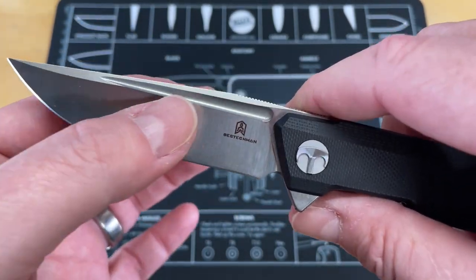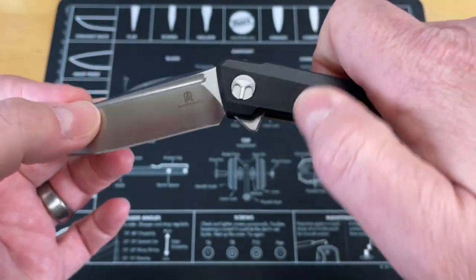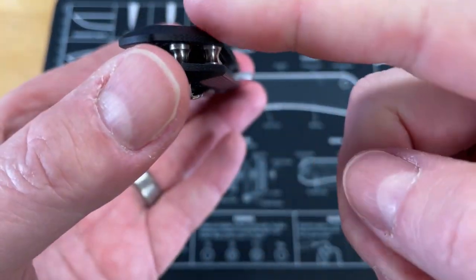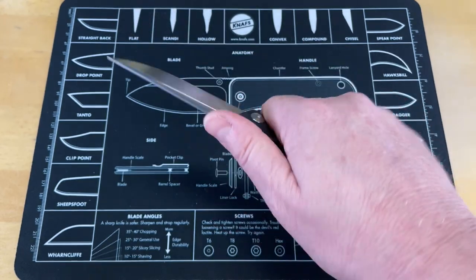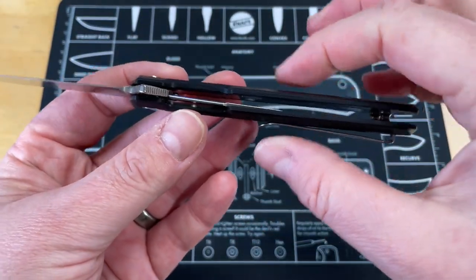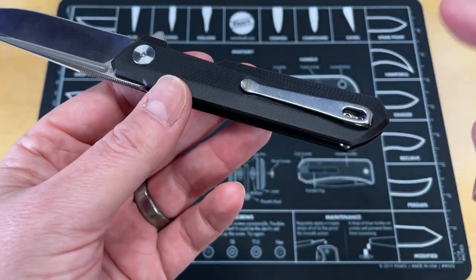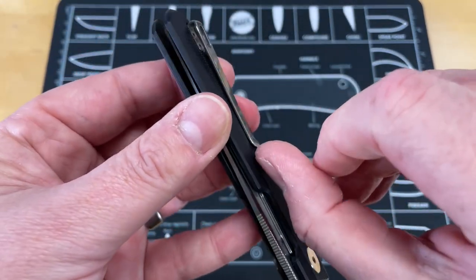It's in that goldilocks zone where it's not too thick, not too thin. Beautiful fuller down the blade, functional jimping, G10 handles that have been chamfered off enough that you get a different feel than you typically do from a thin knife like this. Really good fairly deep carry pocket clip that is long.